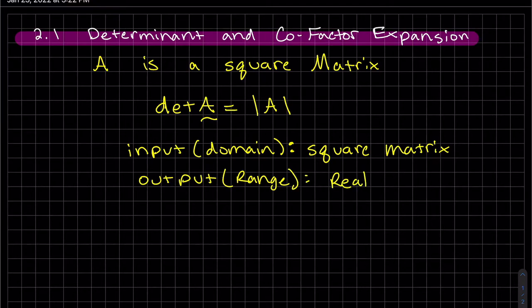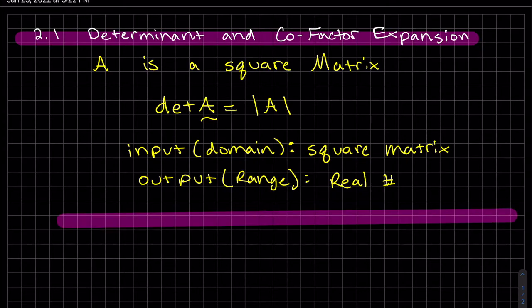Kind of like taking a dot product. Your input's two vectors, your output is a constant. It's a real number. Well, we've seen the formula for a 2 by 2. Let me just write that out again. And remember, you always start with A. Diagonal AD minus the other diagonal.